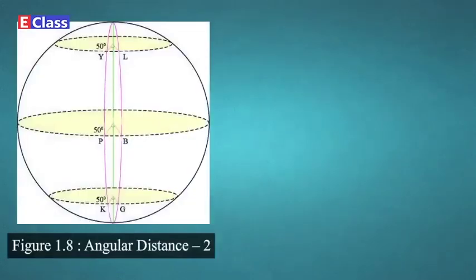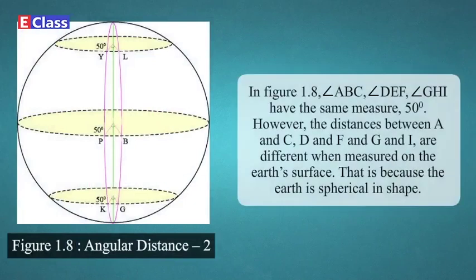Figure 1.8 — Angular Distance 2: In Figure 1.8, angle ABC, angle DEF, and angle GHI have the same measure of 50 degrees. However, the distances between A and C, D and F, and G and I are different when measured on the earth's surface — that is because the earth is spherical in shape.